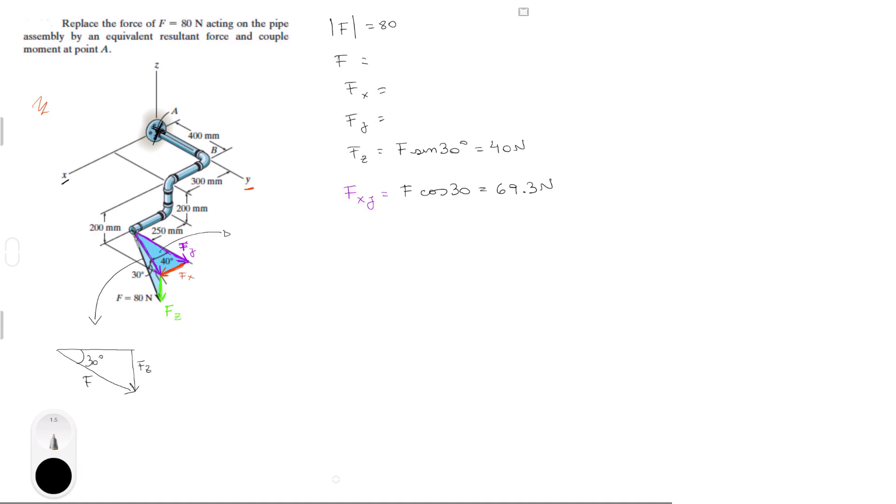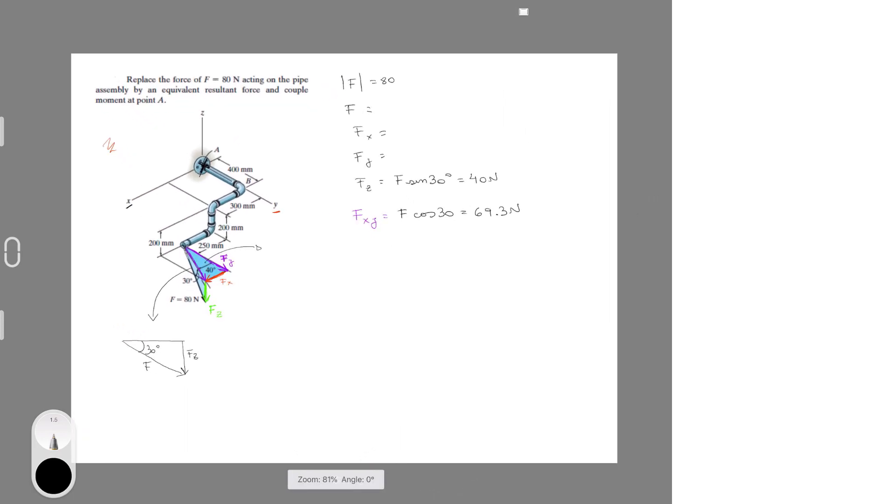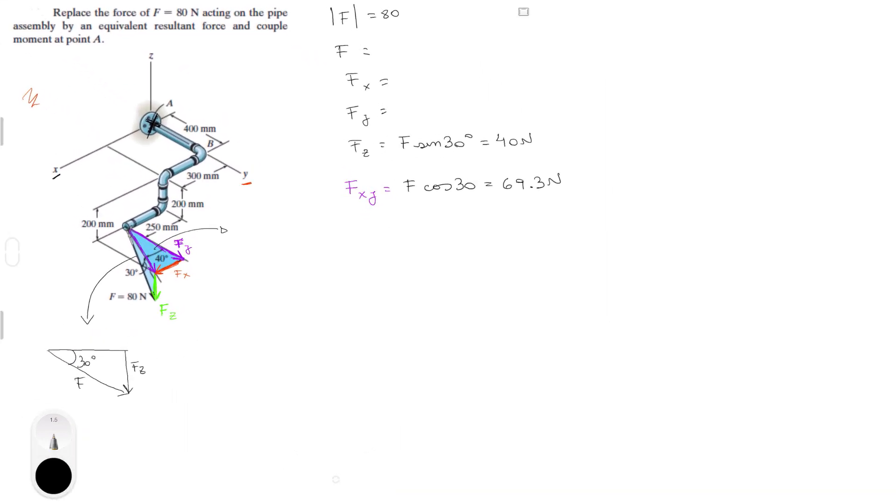I'm going to redraw this triangle right here and it'll all make sense. So this triangle is basically this is F of XY, which we just found. This angle is 40 degrees. Now this is F Y and this is F X. Now we have F of XY and we got the 40 degrees, so we can find the other two easily.